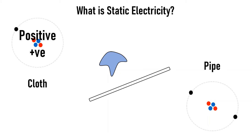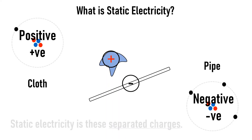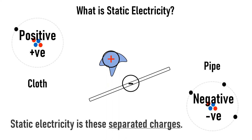On the other side, the pipe gains electrons as the cloth rubs over it. So if we look now, it's got more electrons than it has protons, and so it's going to be negative. That means we have the positive cloth and the negative pipe. And that's all static electricity is — it's the separated charges.